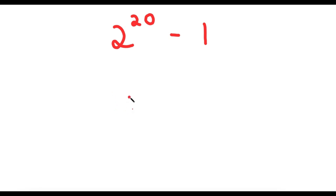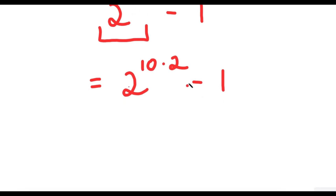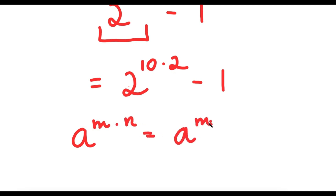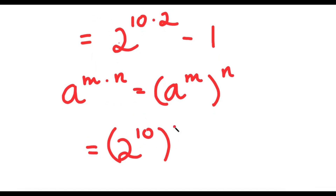To solve this, I'm first going to rewrite 2 to the power of 20 as 2 to the power of 10 times 2. So now I have 2 to the power of 10 times 2, minus 1. And if I have something in the form a to the power of m times n, this is equal to a to the power of m to the power of n. So 2 to the power of 10 times 2 is equal to 2 to the power of 10, to the power of 2. And I have this minus 1.